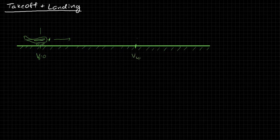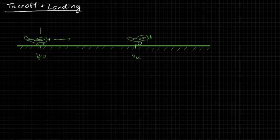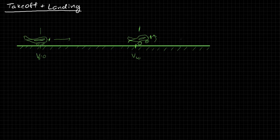The velocity increases until it gets to the liftoff speed, at which time the pilot inputs some elevator deflection and the airplane starts to rotate. It enters the rotation phase, increasing angle of attack until the lift coefficient is high enough that the airplane takes off.